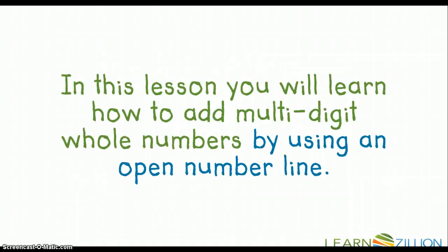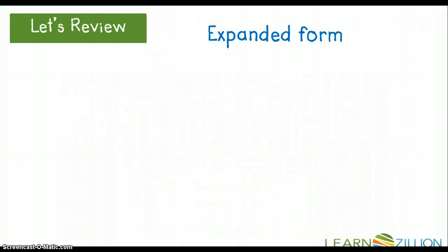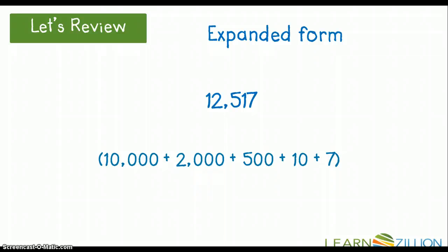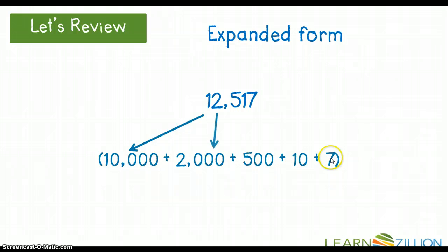In this lesson, you'll learn how to add multi-digit whole numbers by using an open number line. Let's review expanded form — we've talked about it the past couple of weeks in math and yesterday with the partial sums method. Expanded form is when you break a number down by the different values within the number. For 12,517: I have a 1 in the 10,000s place representing 10,000; a 2 in the 1,000s place representing 2,000; a 5 in the 100s place representing 500; a 1 in the 10s place representing 10; and a 7 in the 1s place representing 7.